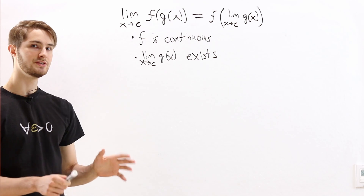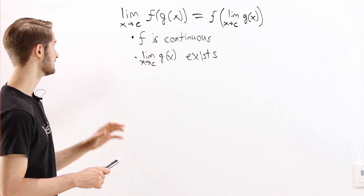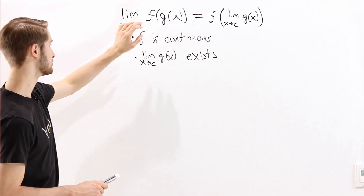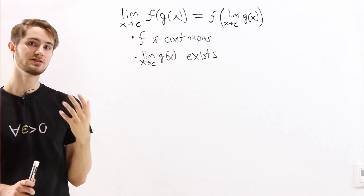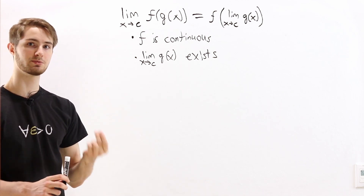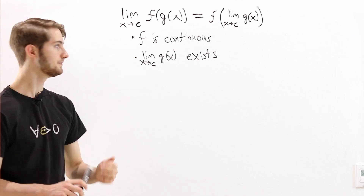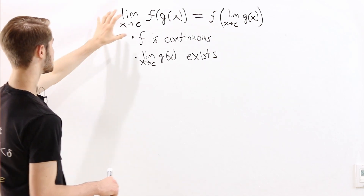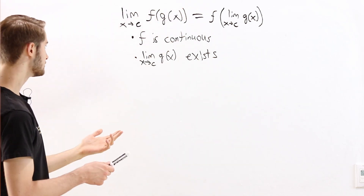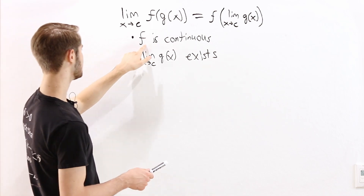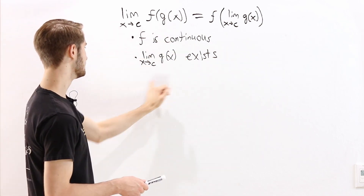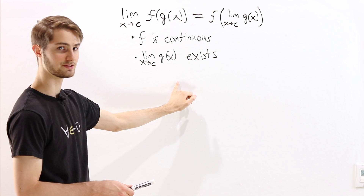The epsilon-delta definition of a limit is very useful for proving results about general functions, because it's how we define limits in the first place. So let's look at the proof of this statement. We're going to assume that the function f is continuous and that the limit of g of x exists.